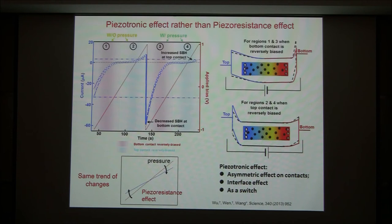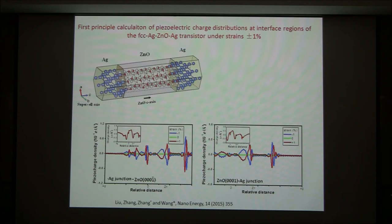What's the difference from the piezo-resistive effect? The piezo-resistive effect is such that regardless of positive bias or reverse bias, if the current drops, it drops both ways — it's called symmetric change. So this is a fundamental difference. It's a new effect, fundamentally different from the piezo-resistive effect. We use first-principles calculations to also verify that.